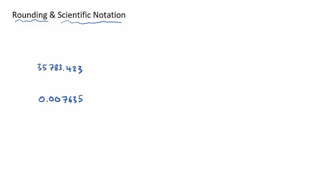These could be answers that you get from questions in wider topics, and the question will ask you to either round to a decimal place or to significant figures. If it doesn't ask you to round at all, we're going to use significant figures. So it's either going to be decimal places or significant figures — let's say for example we're asked for two decimal places.